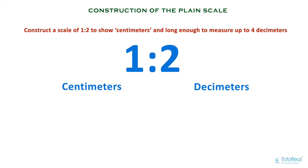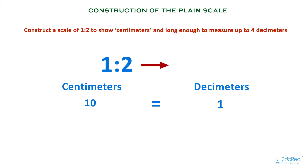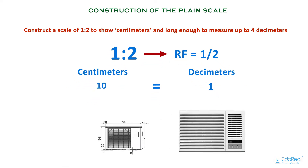Before constructing, let's see the relation between centimeters and decimeters. That is, 10 centimeters equals 1 decimeter. Scale 1 is to 2 means the representative factor, RF, equals 1/2. This means the drawing looks half the size of the original object.